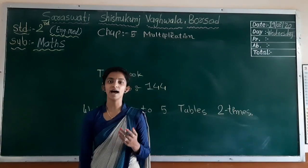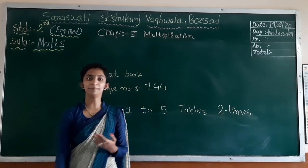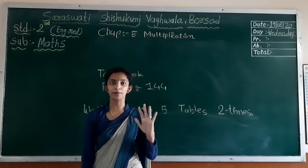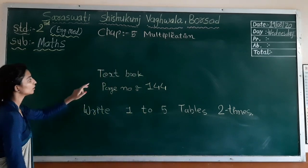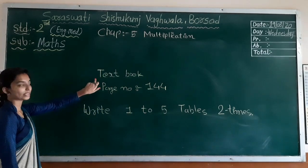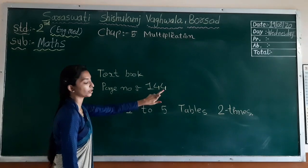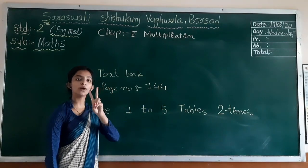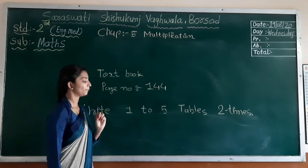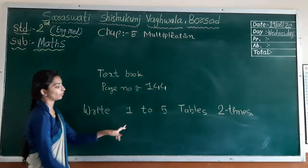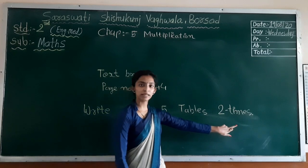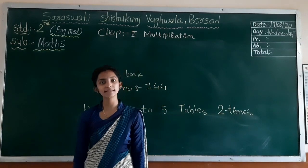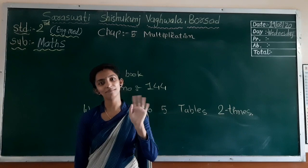So students, I hope you understood the multiplication table for one, two, three, four, and five. Now I will give you work from your textbook, page number 144 — in this space two examples are there, you have to count and write. And you have to write tables one to five to test in your notebook. Write and prepare. Bye bye, thank you.